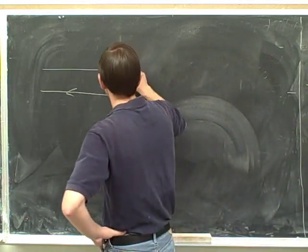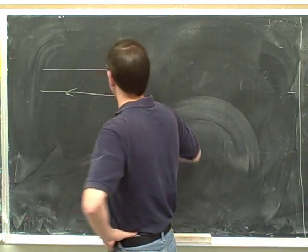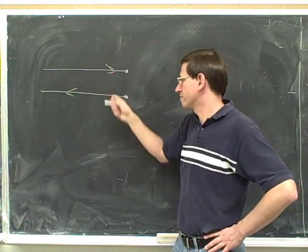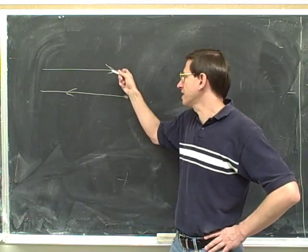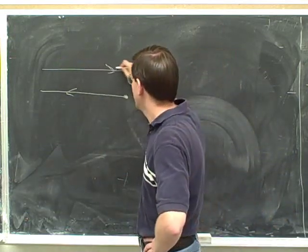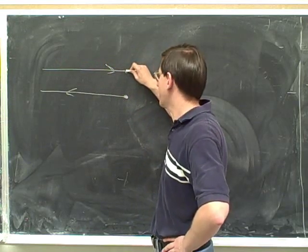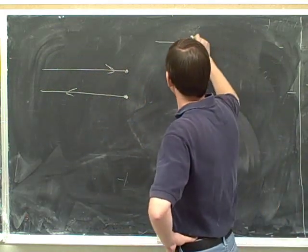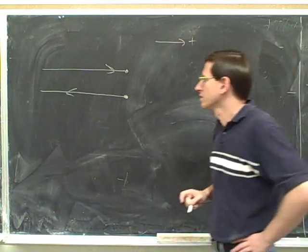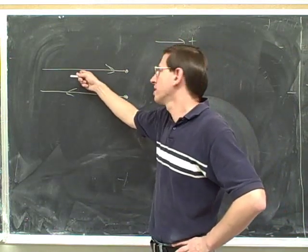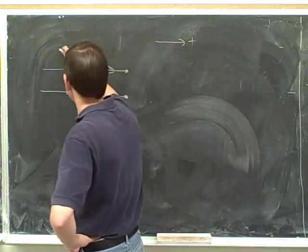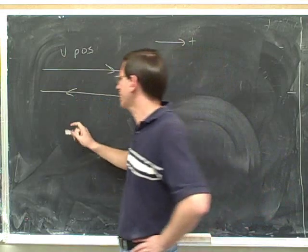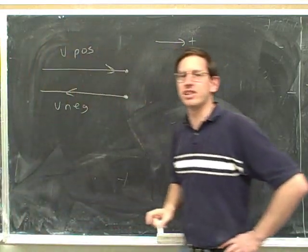Let's try to figure out what the velocity is at the instant that we change direction. Remember that these two points are really the same — I've only drawn them separately so the two diagrams don't obscure each other. But this is the instant at which we're changing direction. If right is our positive direction, then in the portion where we're moving to the right, the velocity must be positive, and in the portion where we're moving to the left, the velocity must be negative.